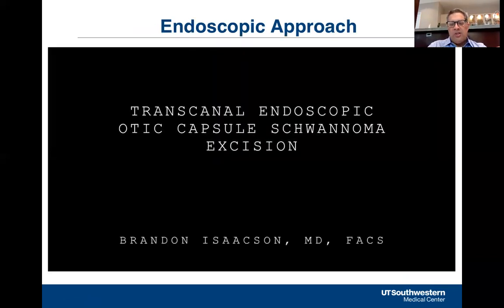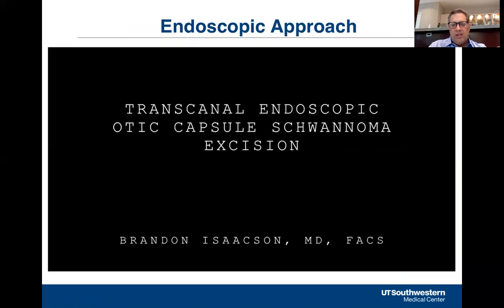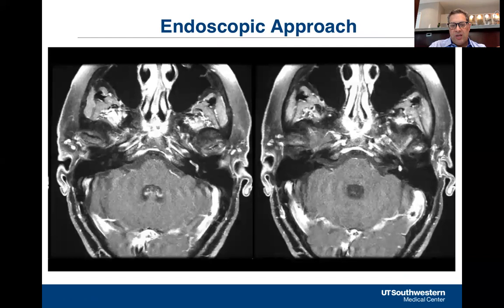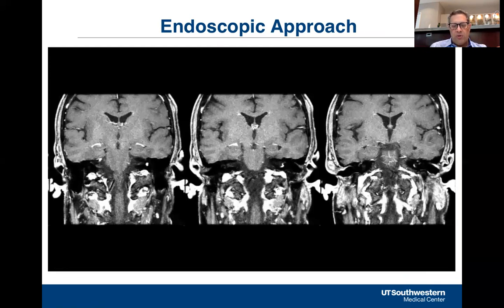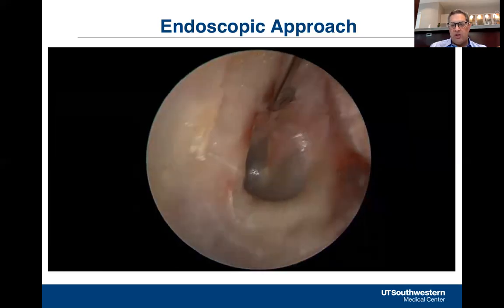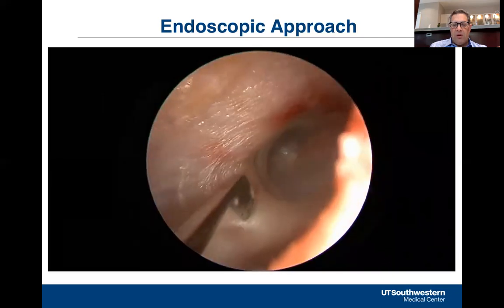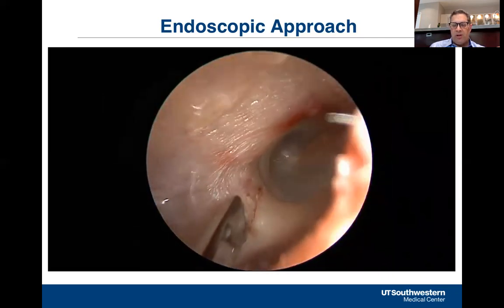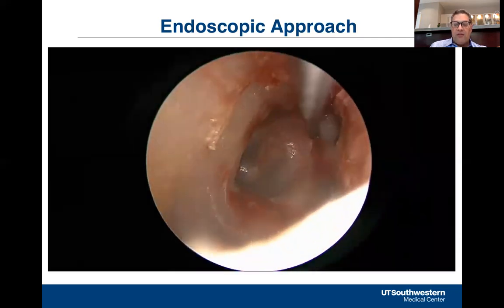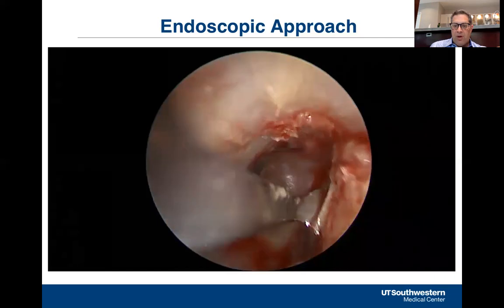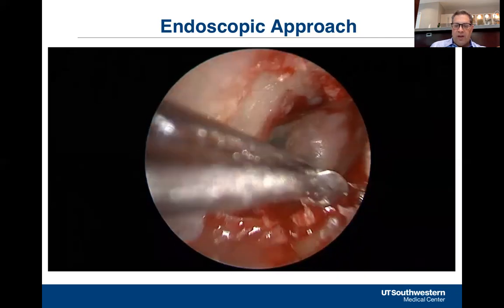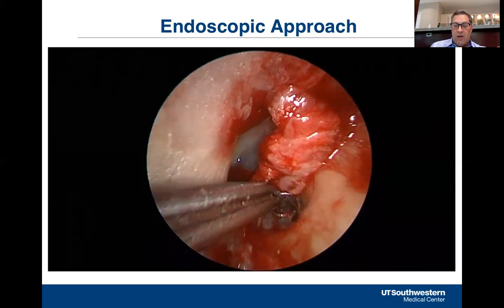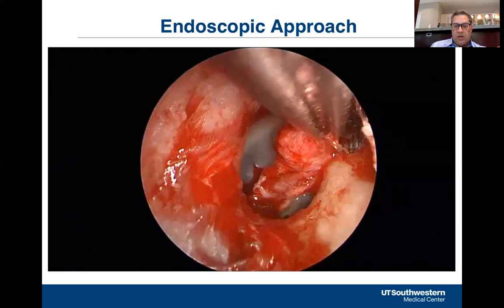This is an example using an endoscopic approach. I'll go into further detail about when I use an endoscope versus a microscope. This patient had an intracochlear and intravestibular tumor, had significant vertigo, and elected to have the tumor removed via this approach. She had Meniere's-like symptoms intractable to medications and gentamicin, so we elected to perform this approach endoscopically. We're doing a traditional tympanomeatal flap — this shows making canal incisions — and we're going to do this entirely via a simple transcanal approach.